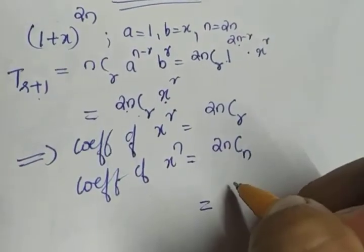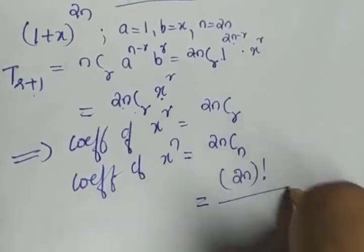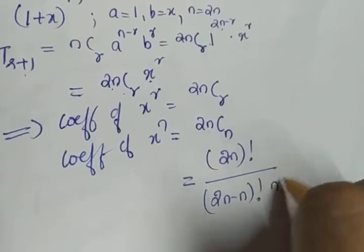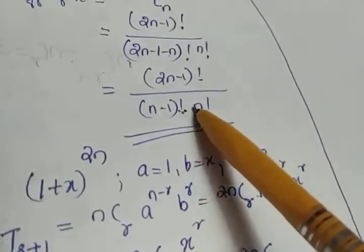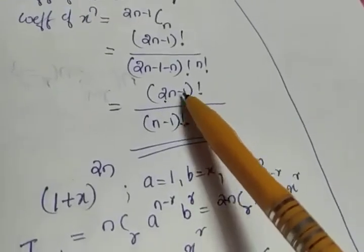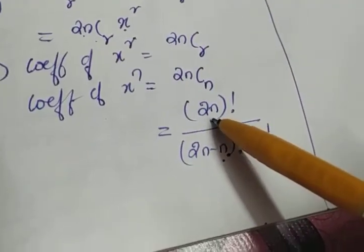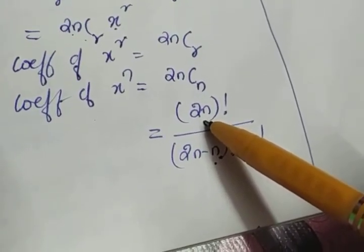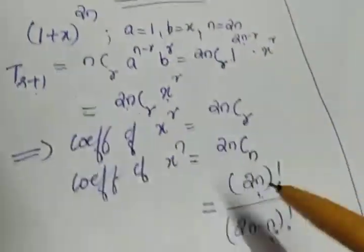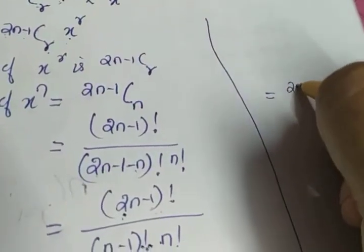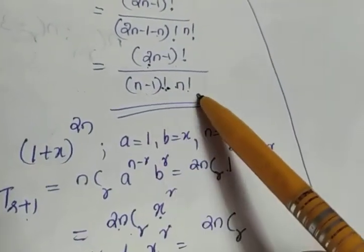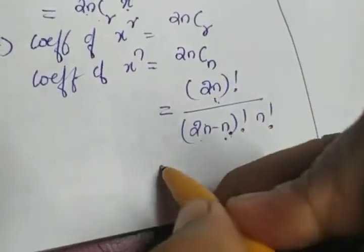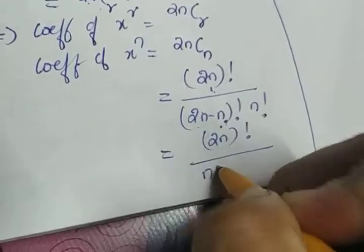Applying the combination formula to C(2n, n), we get (2n)! divided by (2n-n)! times n!, which equals (2n)! divided by n! times n!. We need to compare the two coefficients. The numerator here is 2n, so we rewrite (2n)! as (2n-1)! times 2n, giving (2n-1)! times 2n divided by n! times n!.